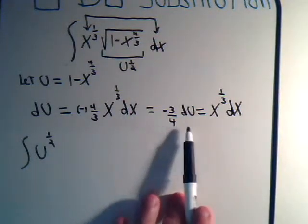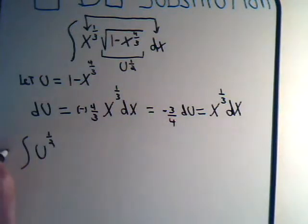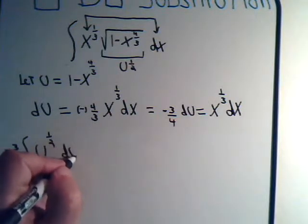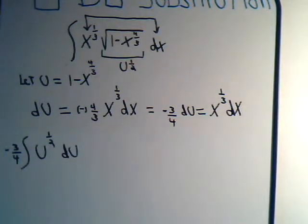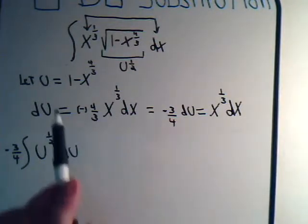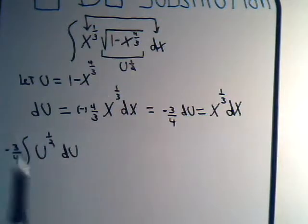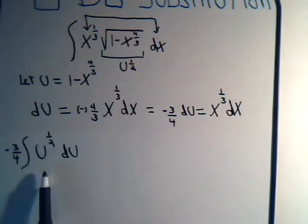that's equal to minus 3/4 times du. That minus 3/4 is a constant. Let's take it out here, and we have du. So now with this substitution, this integral now changes into this form, which we can integrate right away.